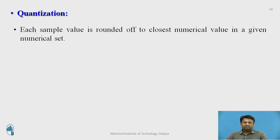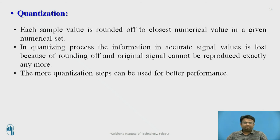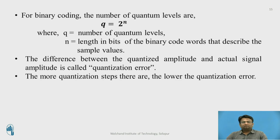Each sample value is rounded up to the closest numerical value, which is called quantization. In the quantization process, information in the accurate signal value is lost because of the rounding of values, so the original signal cannot be reproduced exactly. We need more quantization steps for better performance. For binary coding, the number of quantum levels is given by q = 2^n, where q is the number of quantum levels and n is the length in bits of the binary code words that describe the sample values. The difference between the quantized amplitude and the actual amplitude is called the quantization error — the more quantization steps, the lower the quantization error.